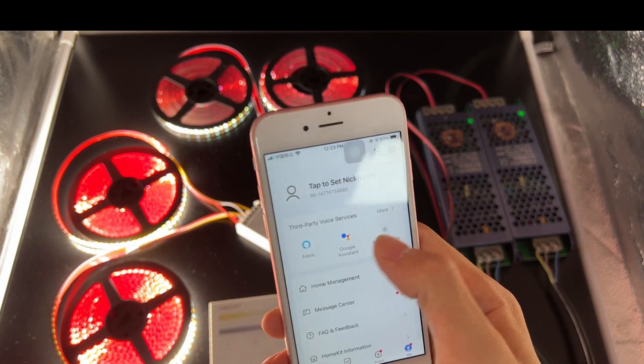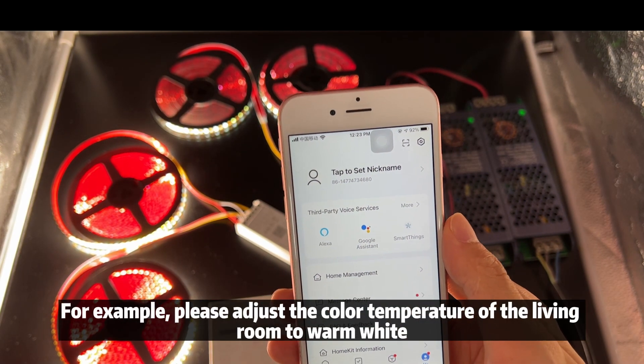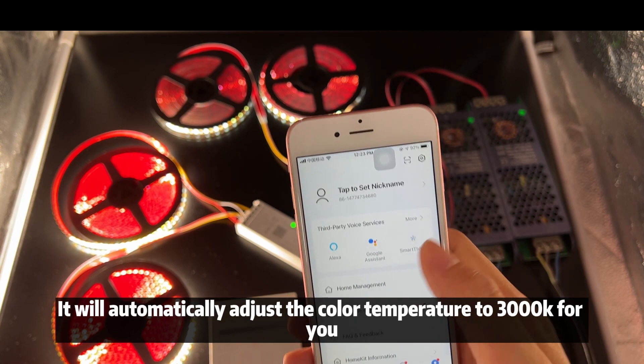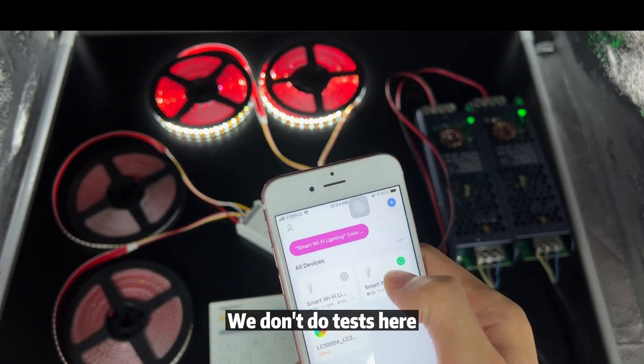If we match the voice device through this controller, you can send your voice directly through the voice assistant. For example, please adjust the color temperature of the living room to warm white. It will automatically adjust the color temperature to 3000K for you. We don't do tests here.